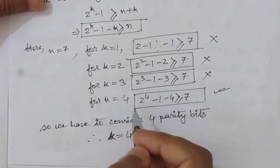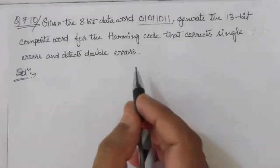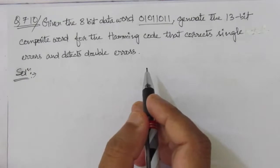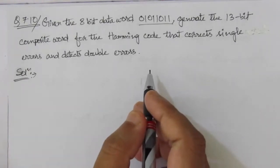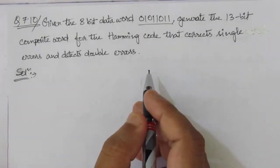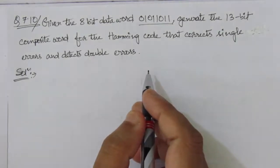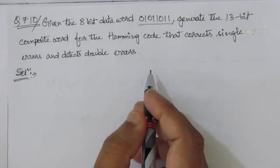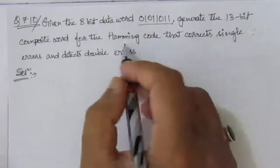I will give the link to this previous video in the description section. Before watching this solution, you should be clear about how the Hamming code is generated, how the parity bits are used for error detection, and how the check bits are used to detect and correct errors.